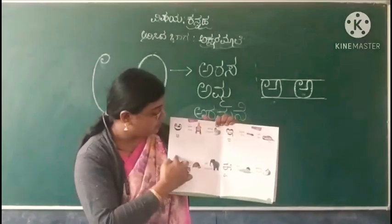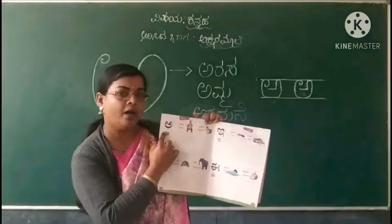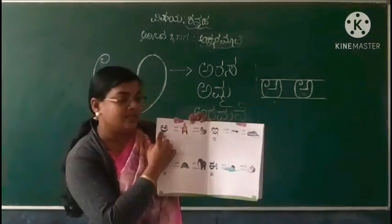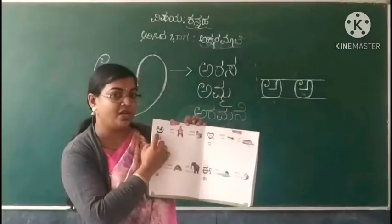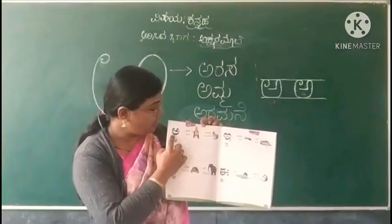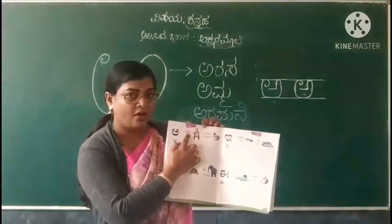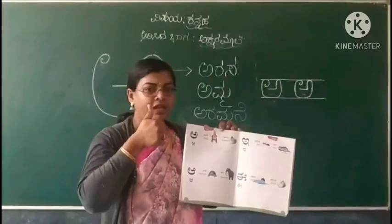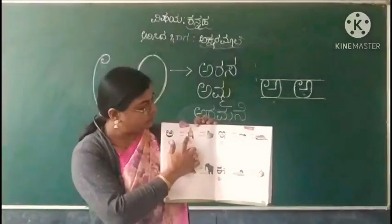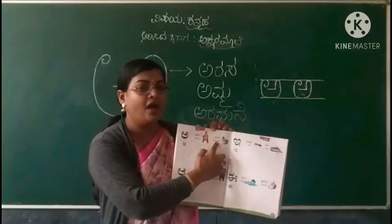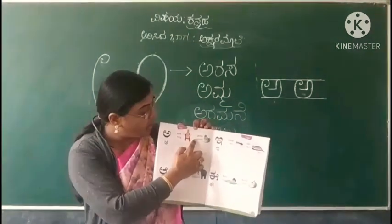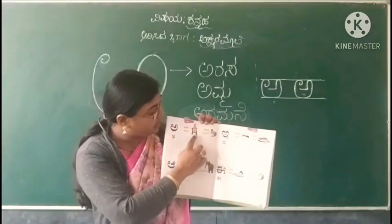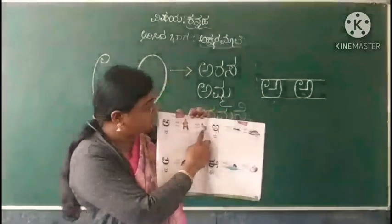They have given here the letter A. We have to complete this. This is letter A — A means Arasa. A-indha, Ailu. Ailu means squirrel. Can you see the picture, children?